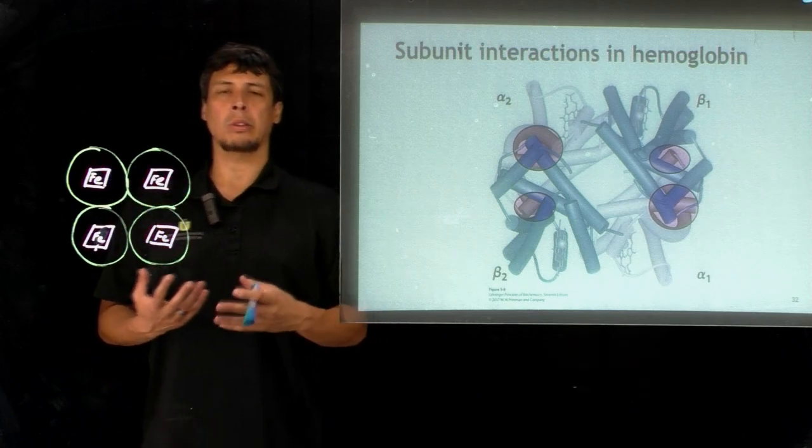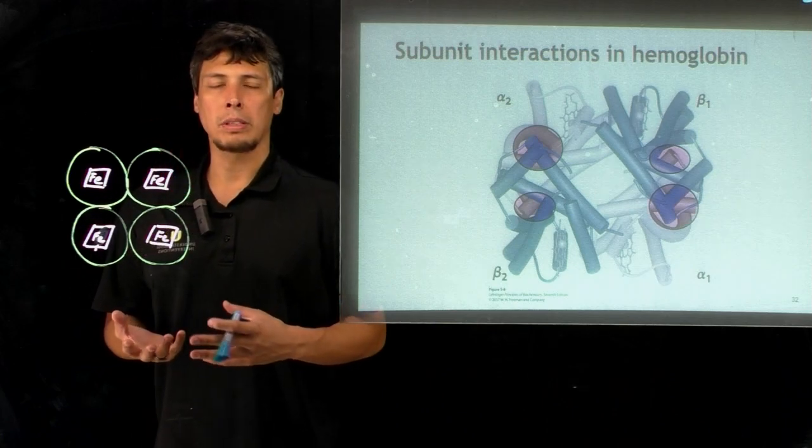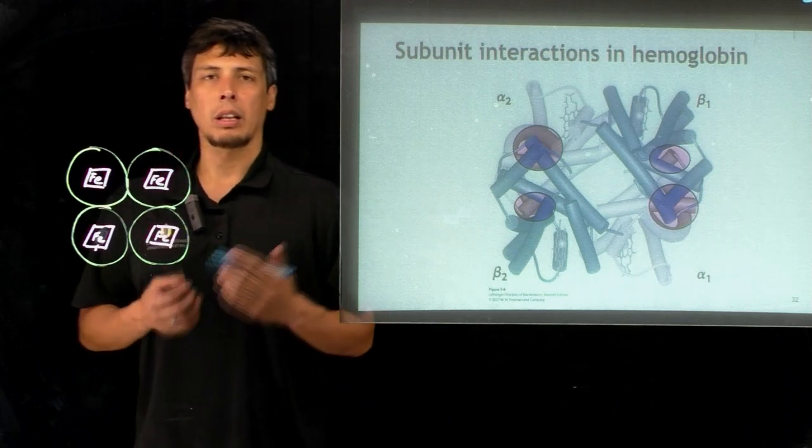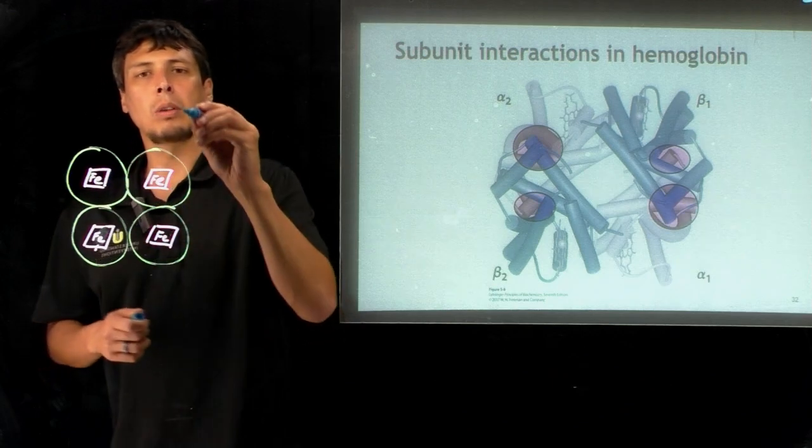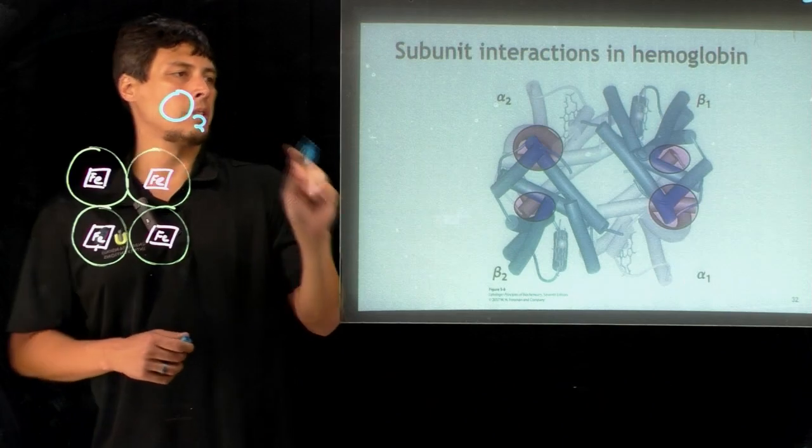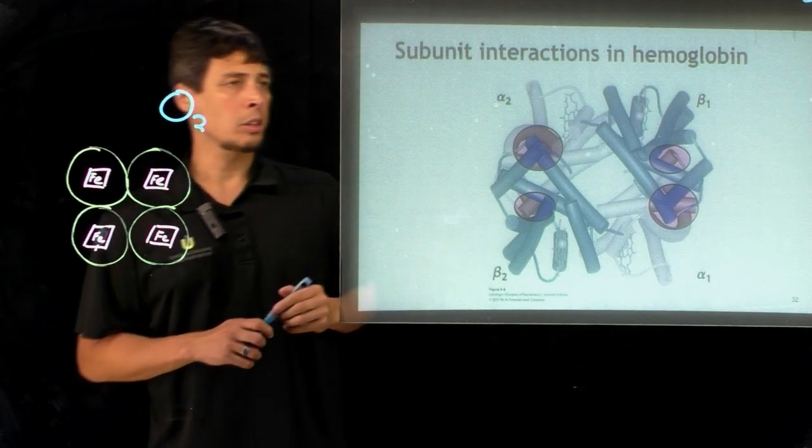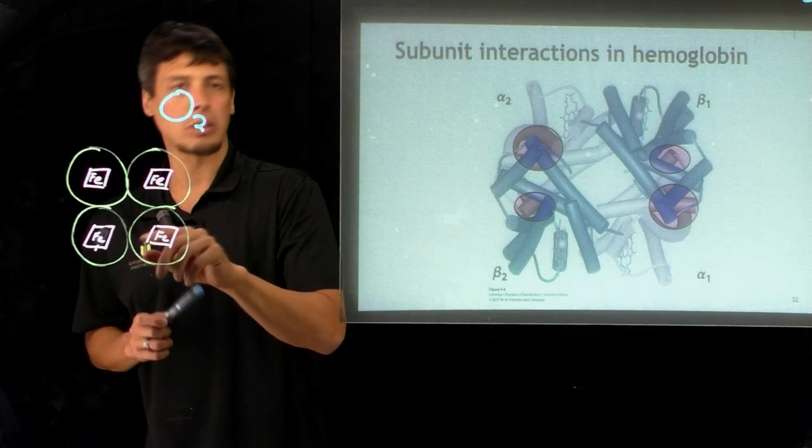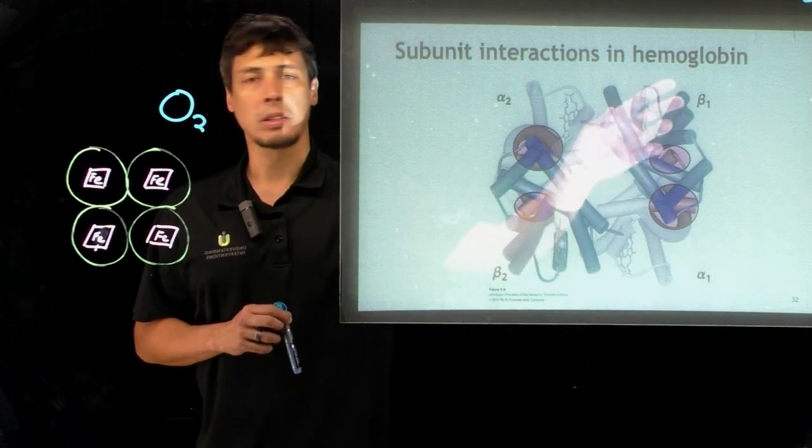What are the actual structural pieces of hemoglobin that allow for this communication between binding sites when we bind O2? This interaction actually occurs at the subunit interfaces, in between the alpha and the beta subunits.